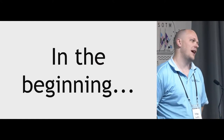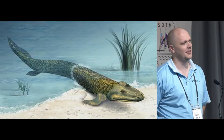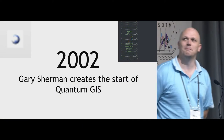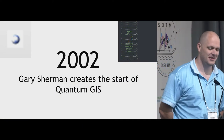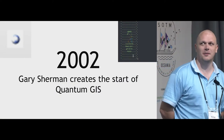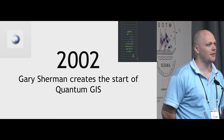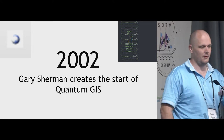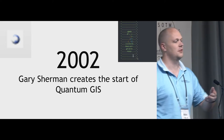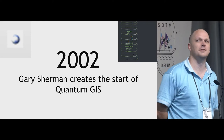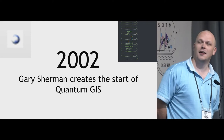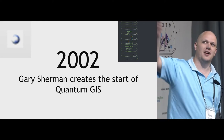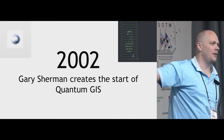Back in the beginning, 2002, Gary Sherman created the start of Quantum GIS at the time. It wasn't actually called QGIS, although the code reference is QGIS, so the official name is Quantum GIS. This is the first logo that you would see if you started it up in the title bar.